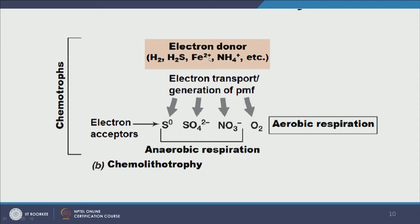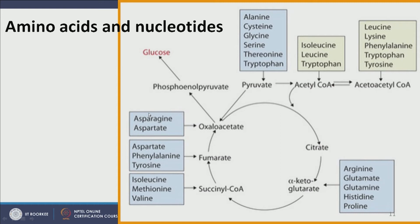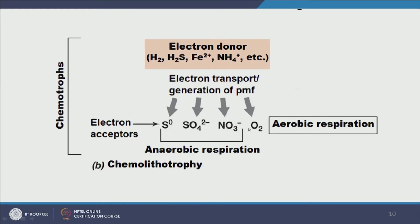In chemo-lithotrophs, different inorganic compounds serve as the source of energy. Electron acceptors can include sulfur, sulfide, nitrate, or oxygen. In the case of oxygen it is aerobic respiration; otherwise it is anaerobic respiration. So electron donation and carbon source are two different parallel reasons for classifying microbes into types such as chemo-lithotrophs or chemo-organotrophs, and they use energy for either producing biomass or driving their biochemical reactions.